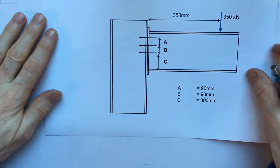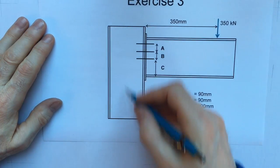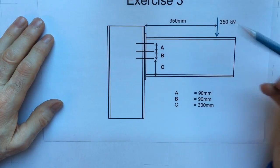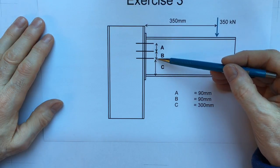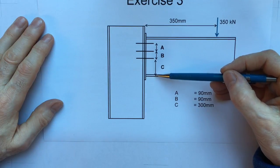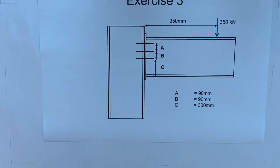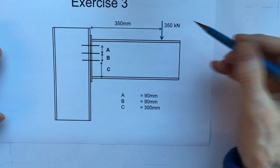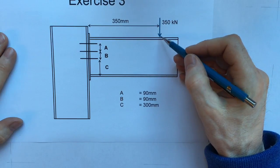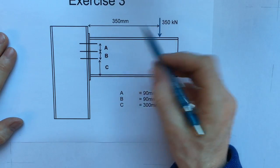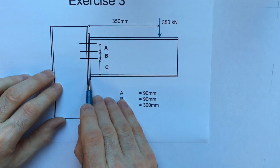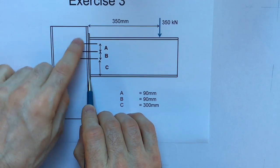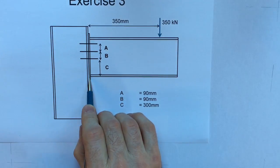Now let's have a look at an actual connection. Here's a beam connected to a column, these bolts are set out as follows: 90 millimeters between these two, 90 millimeters between these two, and 300 millimeters down to the center line of that bottom flange. There's a force of 350 kilonewtons applied to this beam at a distance 350 millimeters from the face of the column which is the interface.